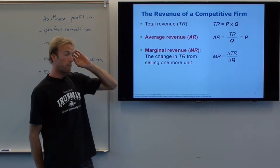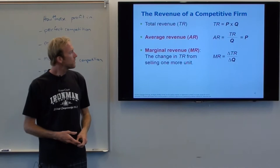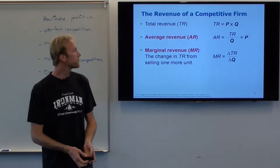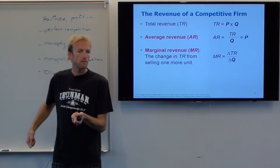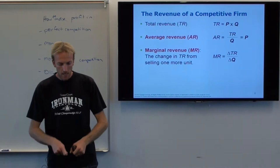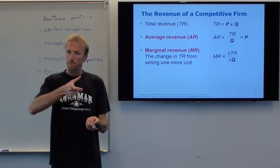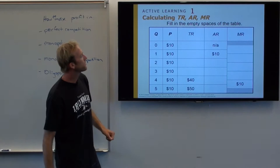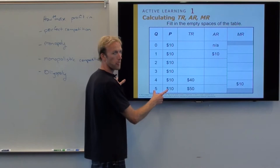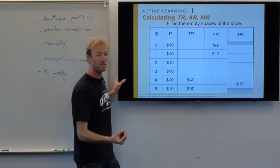Now let's talk about marginal revenue — the amount you get from selling one more product. Average revenue: if I'm selling 10 ShamWows, on average how much am I getting per ShamWow? Just the market price. Marginal revenue: if I sell one more ShamWow, how much additional do I get? Let's work through an example in a perfectly competitive market. I can sell either 0, 1, 2, 3, 4, or 5 products, and the price I can sell each one for is $10.